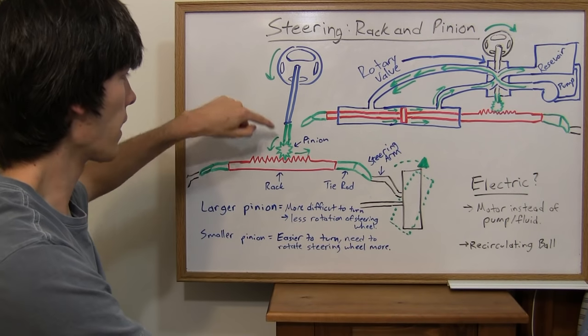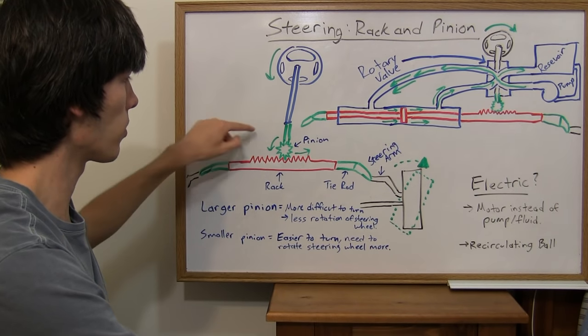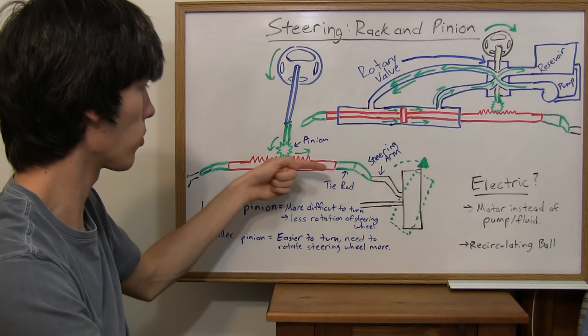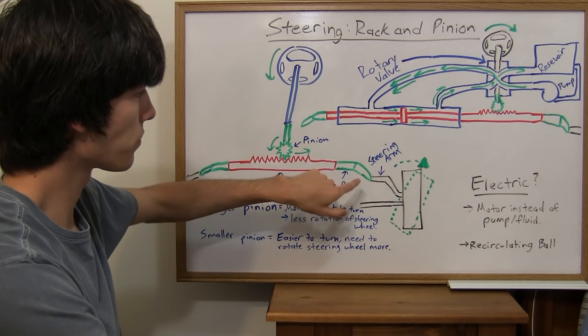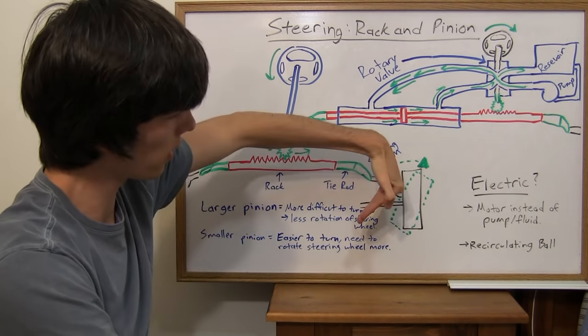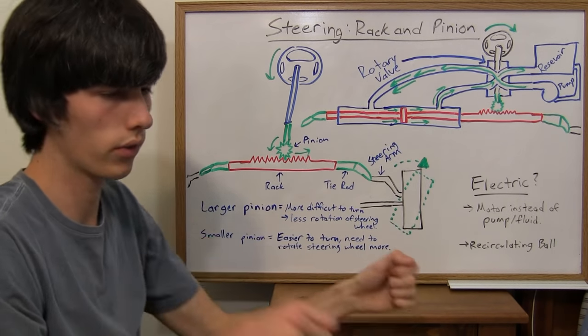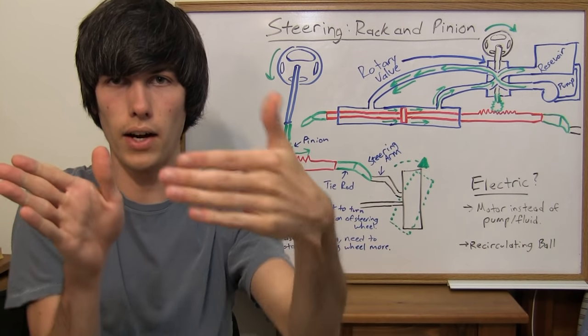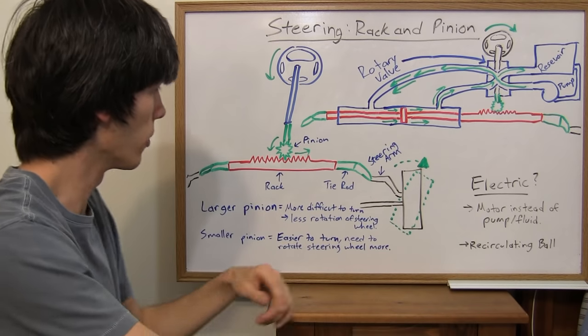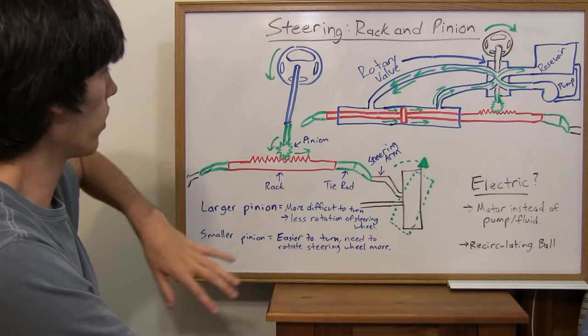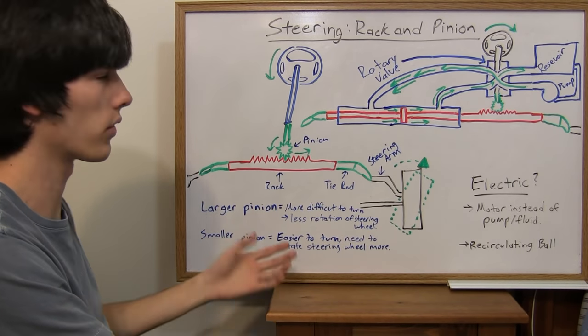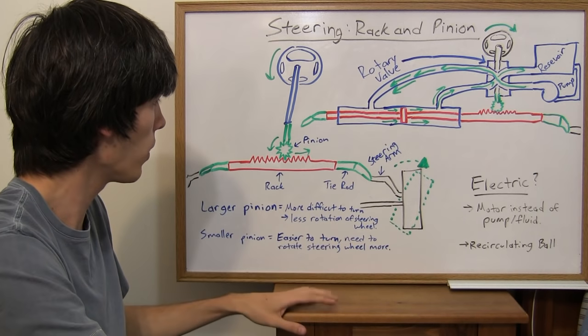So you turn that to the right. That's going to turn this pinion to the right which is going to force this rack to go to the right, which is going to force that tire to turn clockwise. So if you turn like this, that tire's going to go like that and turn with you. So that's how a basic rack and pinion works. It's a very simple device and it works well.